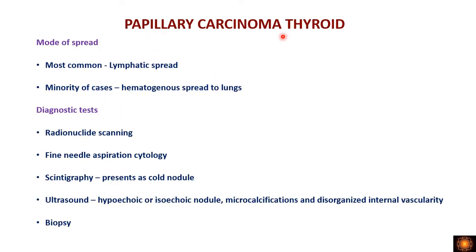The most common mode of spread is lymphatic spread to cervical lymph nodes. In a minority of cases, hematogenous spread to the lungs can also occur. Diagnostic tests include PET scan, radionuclide scanning, fine needle aspiration cytology, scintigraphy (presenting as a cold nodule), ultrasound (hypoechoic or isoechoic nodule with microcalcifications and disorganized internal vascularity), and core biopsy. Thyroid function tests are of no diagnostic use in papillary carcinoma.